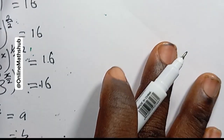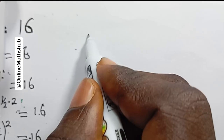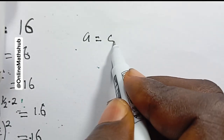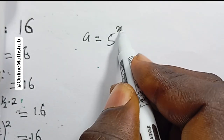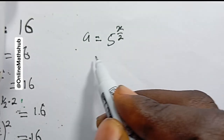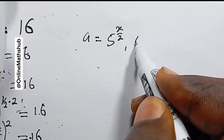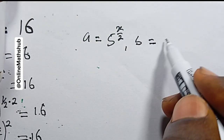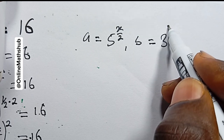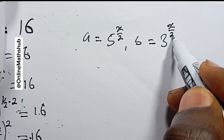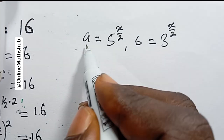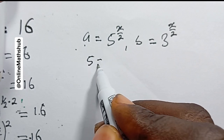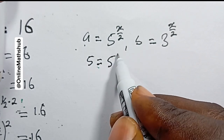Don't forget we set a = 5^(x/2) and b = 3^(x/2). For a: we have 5 = 5^(x/2).